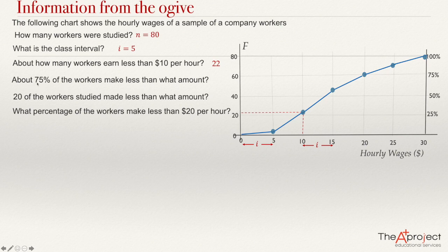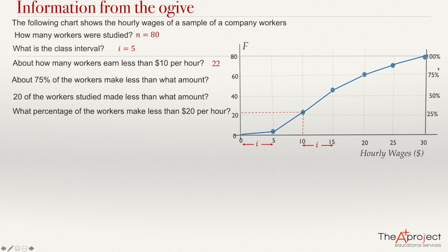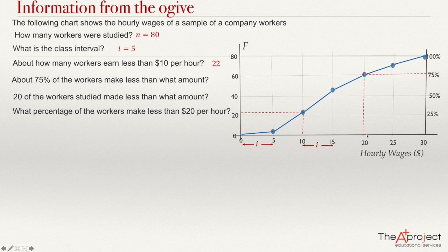The fourth question: about 75% of the workers made less than what amount? On the right side of the ogive, I have the cumulative relative frequency. Starting from 75% on the right axis, I move left to find the corresponding point on the ogive, then go down to read the x-axis value. This gives $20. So 75% of the workers made less than $20.